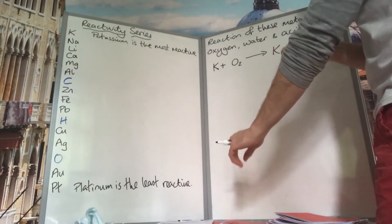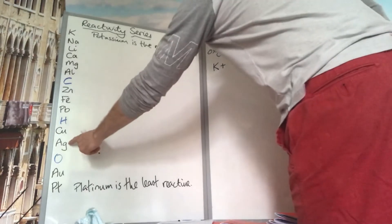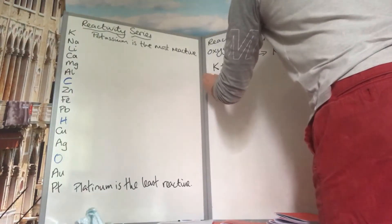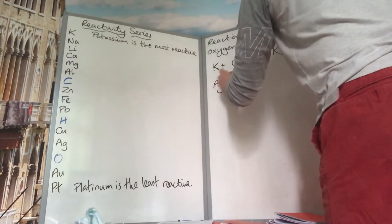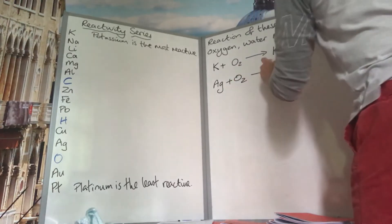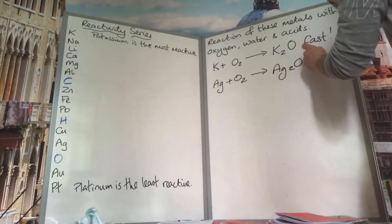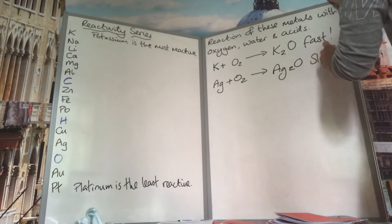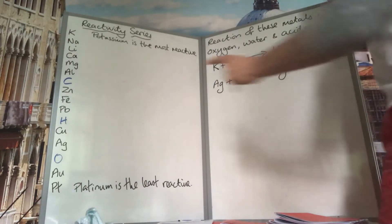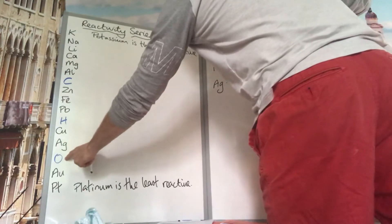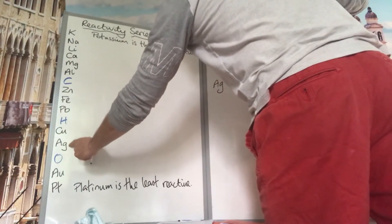If we then compare that to the reaction of silver with oxygen, it's going to give us a reaction that is incredibly slow. And that's because silver is only just above oxygen. So slow reaction here, a very fast reaction there.